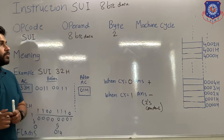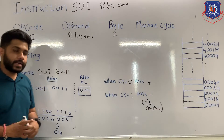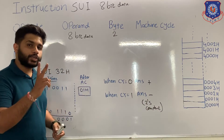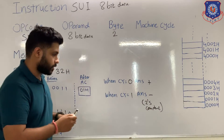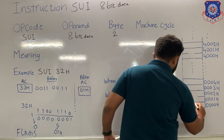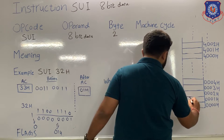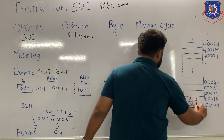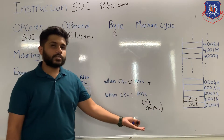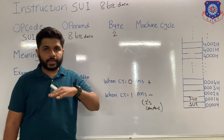Now let's see the machine cycle. This instruction is of 2 bytes, so when it is stored in the memory, it will occupy 2 memory locations. In the first location, the opcode will be stored, and in the next location, the data will be stored. After the instruction is stored, the microprocessor will start its task: fetch, decode, execute.